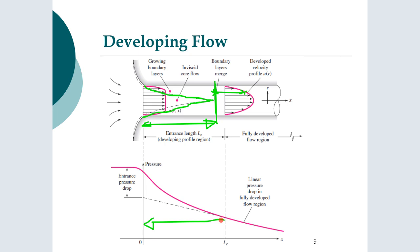We refer to this as the entrance length of the pipe. In the region forward of that, it is the linear pressure drop in the fully developed flow. We use the standard equations for fully developed flow. But always in the entrance region, or any time we have acceleration in the flow — such as going around a bend, or having an expansion or contraction — we will have influences due to inertia.